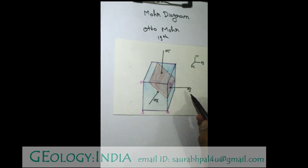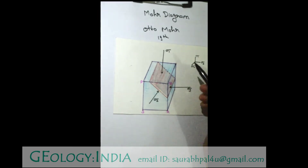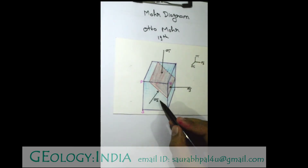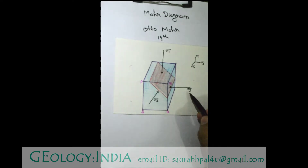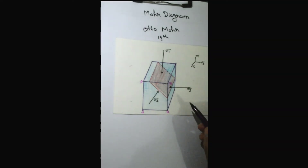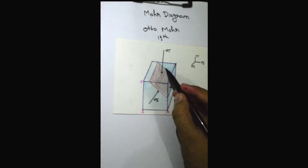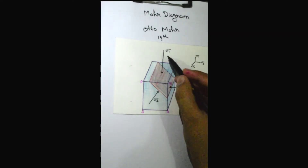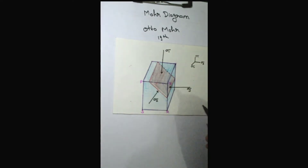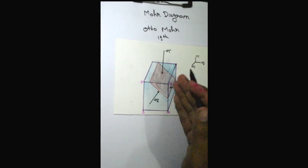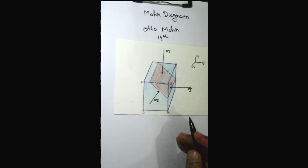Sigma 1 is the maximum principal stress axis. Sigma 2 is the intermediate principal stress axis. Sigma 3 is the lowest principal stress axis, and these three principal stress axes are mutually perpendicular to each other. We know the values of sigma 1, sigma 2, and sigma 3 because these are the principal stress axes being applied on the block, and because of that stress a fault plane or fracture plane is generated.